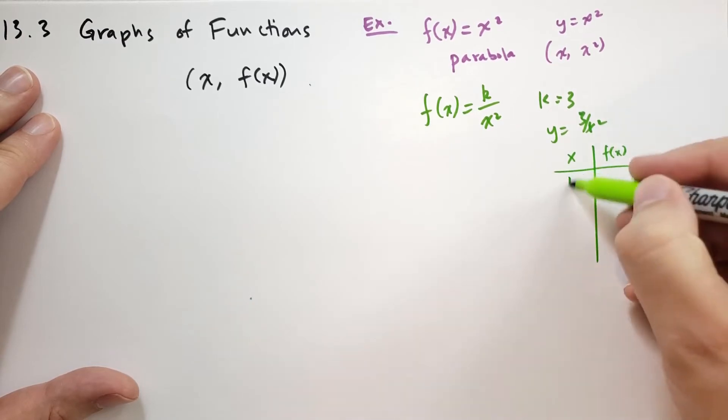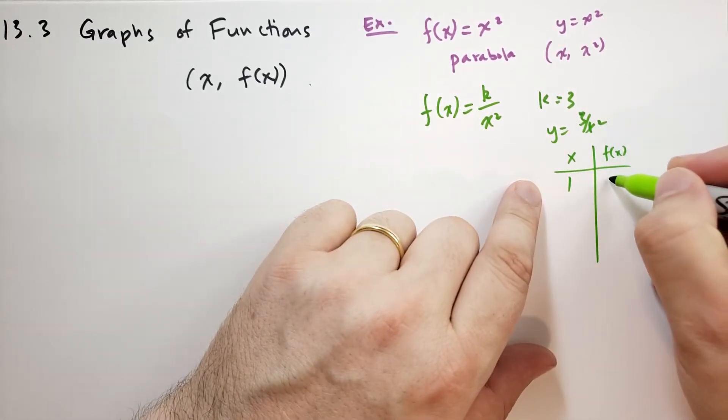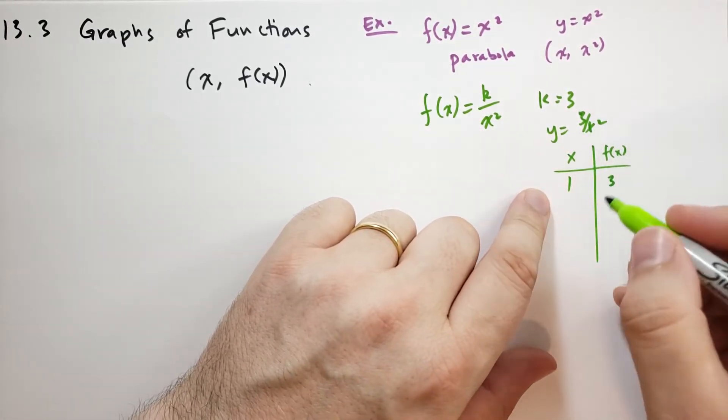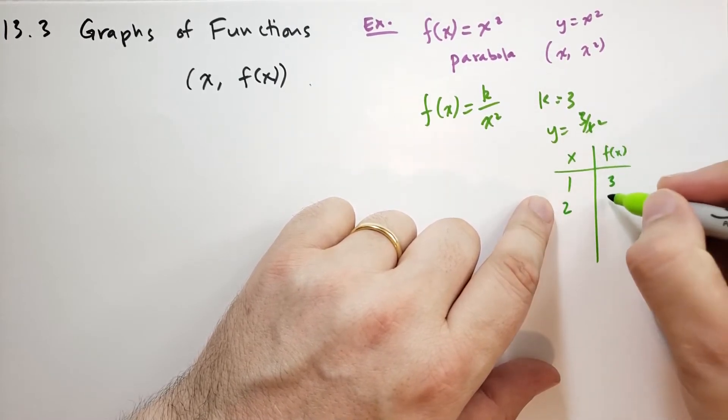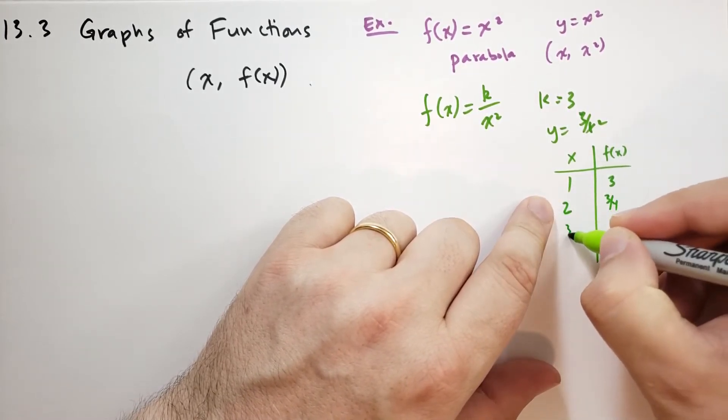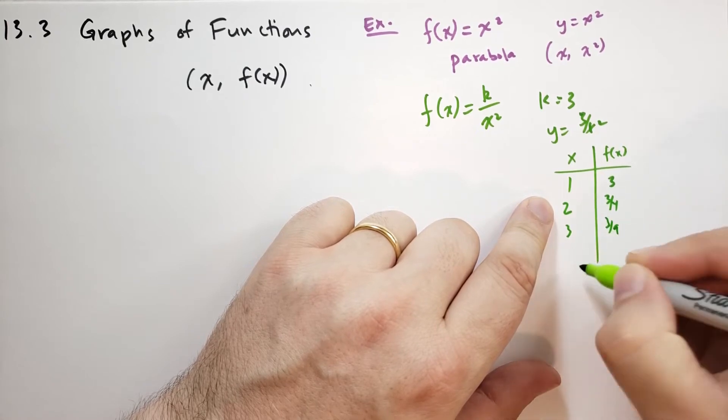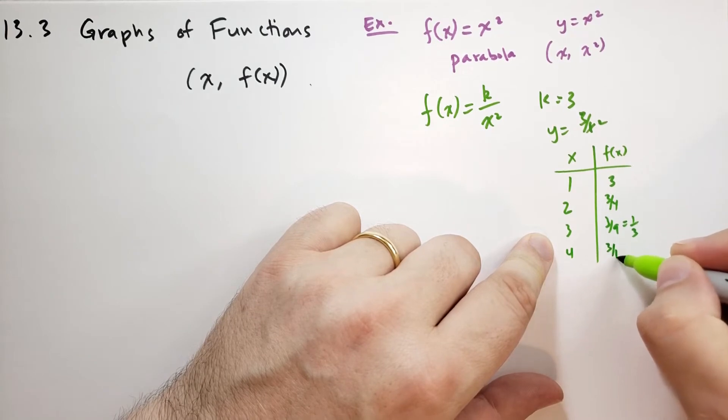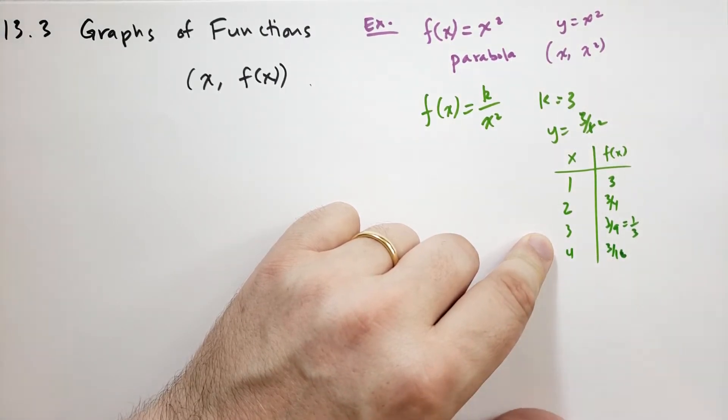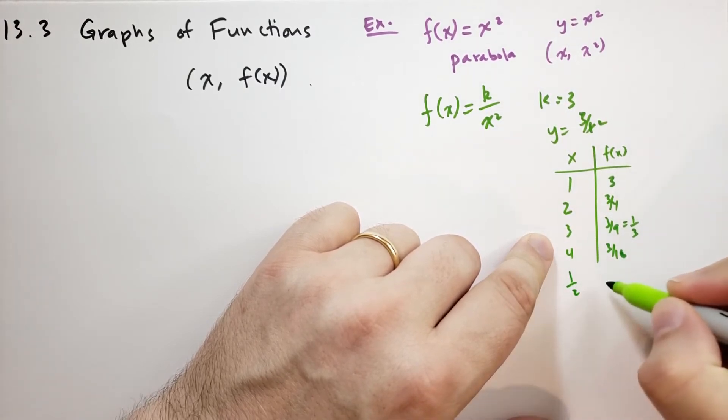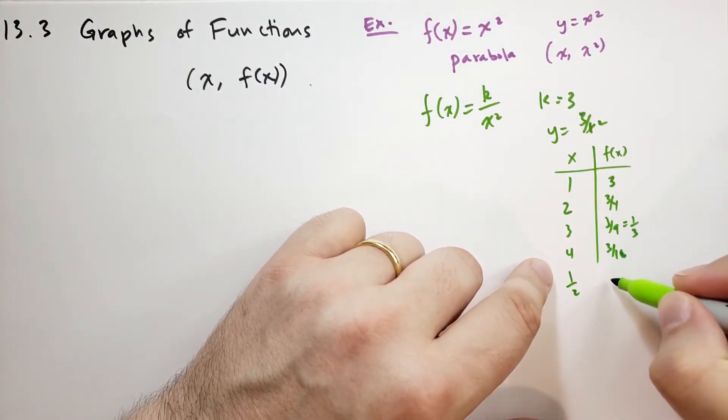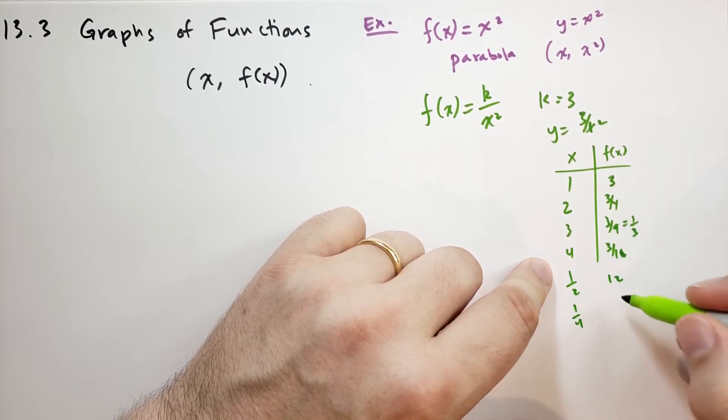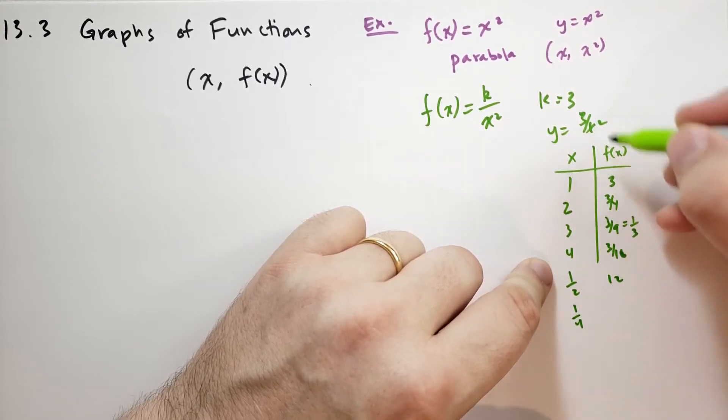So when x is 1, then we're going to have f(x), which is 3 divided by 1, which is 3. When x is 2, this is going to be 3 over 4. When x is 3, you're going to have 3 ninths, or 1 third. When x is 4, you're going to have 3 over 16, and so on. And if we take x smaller, so let's say x is 1 half, then that would be 3 times 4, 12. And 1 quarter would be 3 times 16, 48.